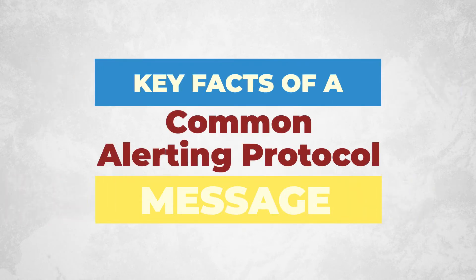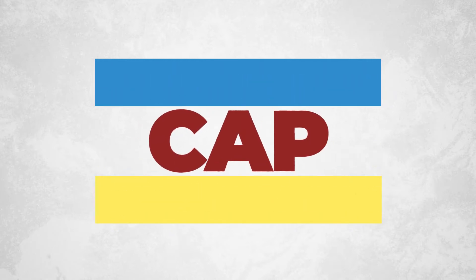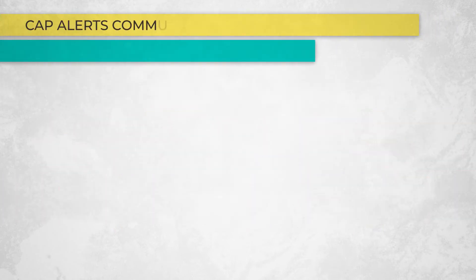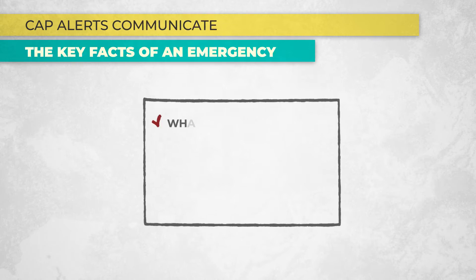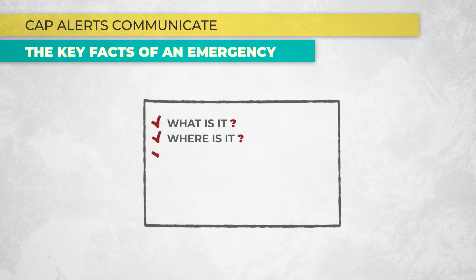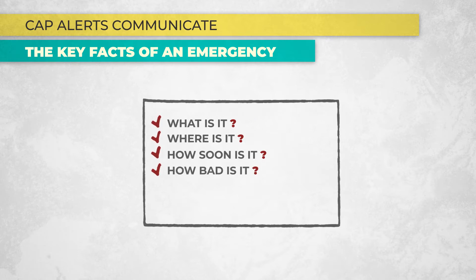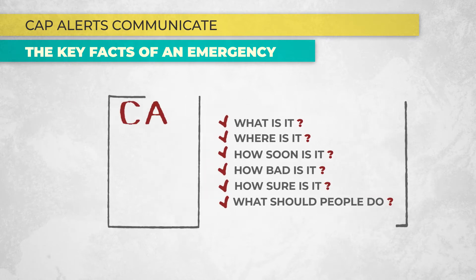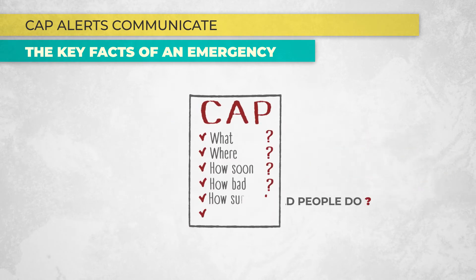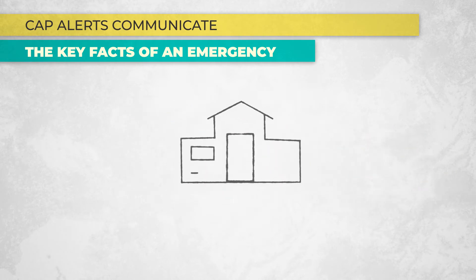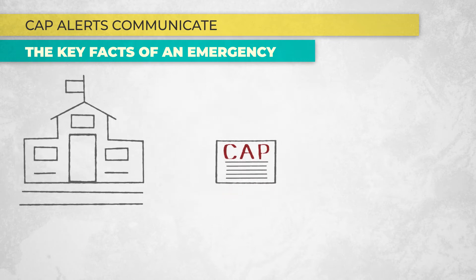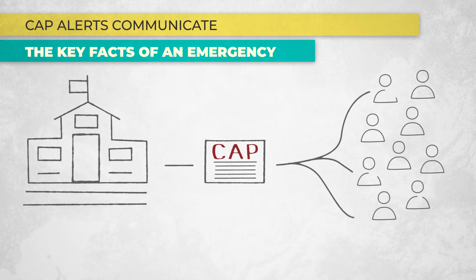The Common Alerting Protocol, or CAP, is a standard message format that helps enhance emergency alerting. CAP alerts communicate the key facts of an emergency, such as: What is it? Where is it? How soon is it? How bad is it? How sure is it? And what should people do? This video highlights some key elements of an alert and how they are captured in a CAP message, allowing alerting authorities to send out consistent emergency communication to the public.